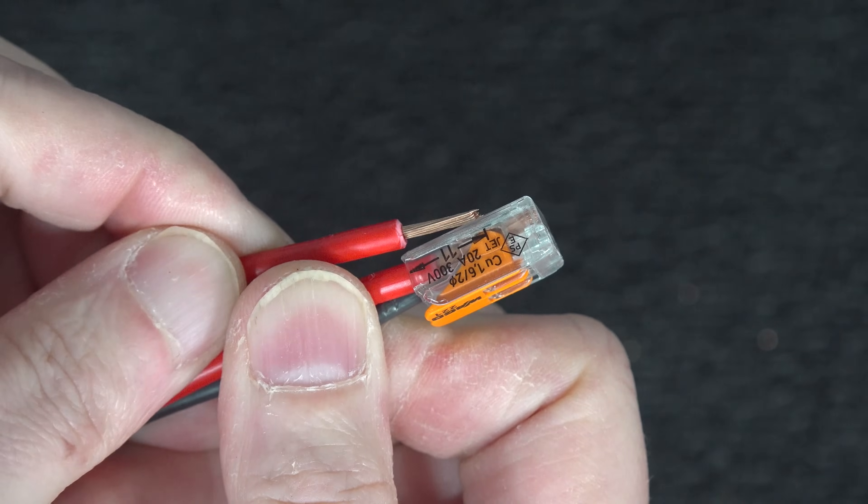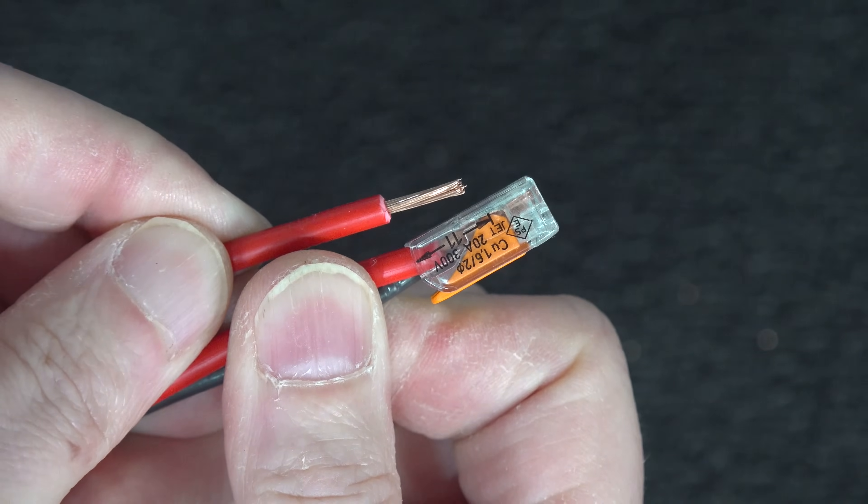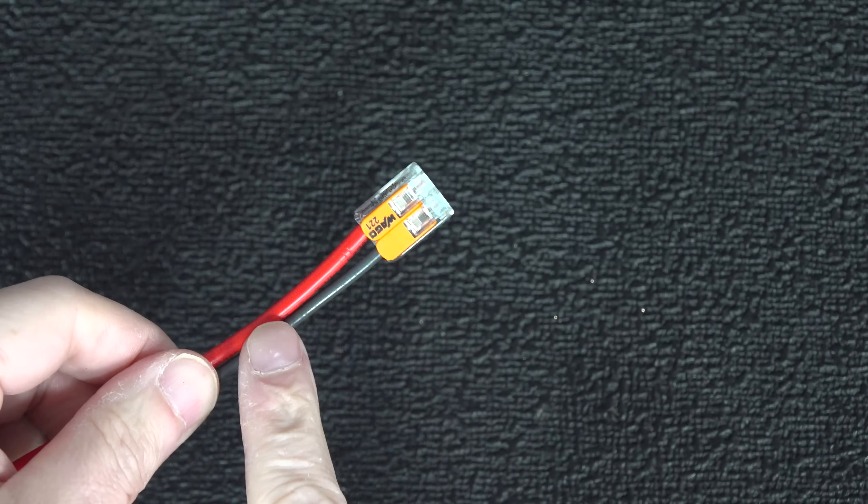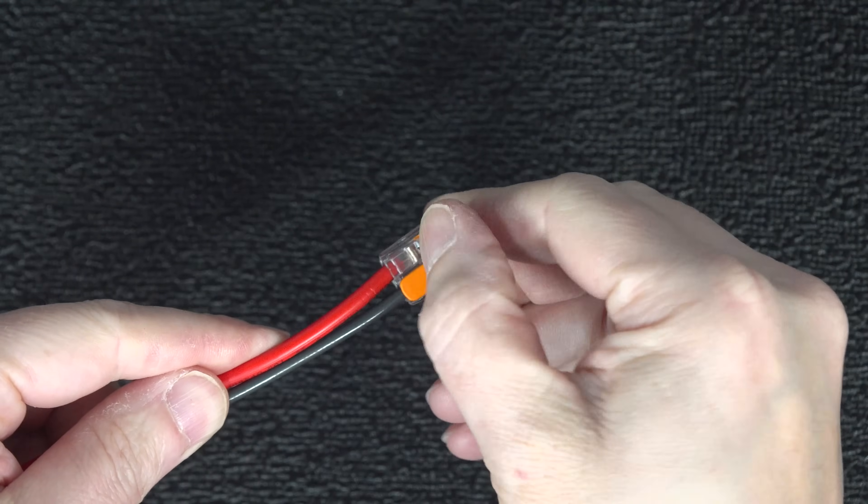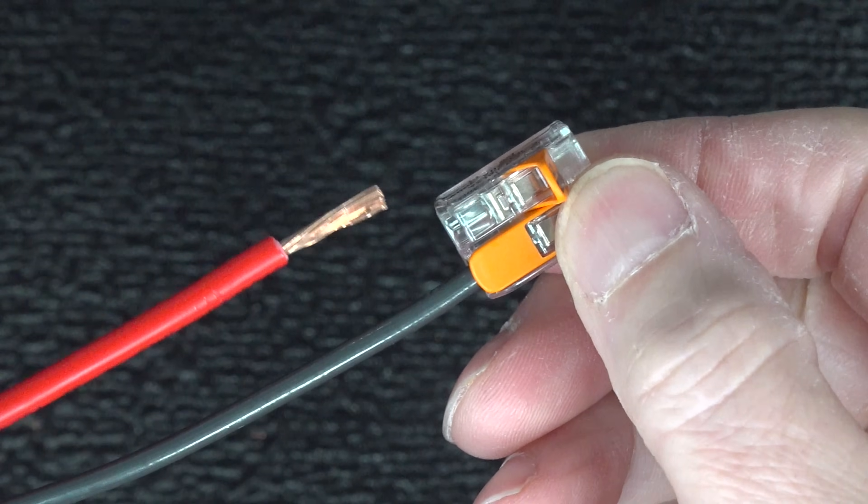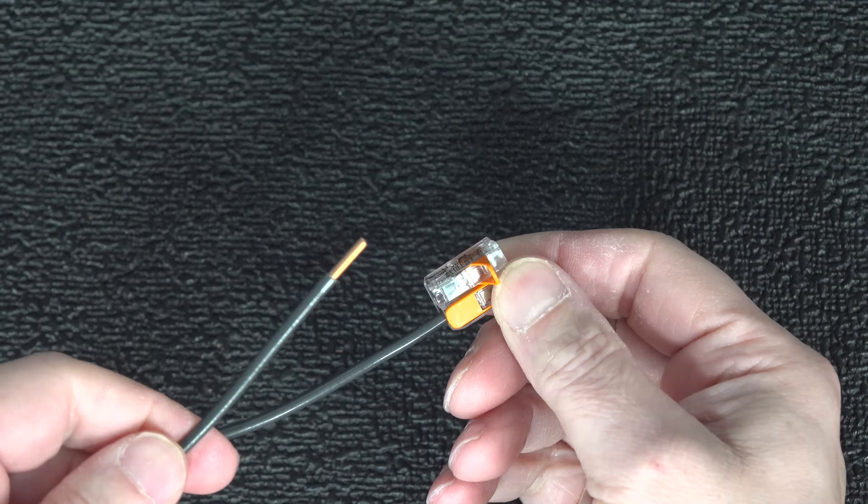But what if you make a mistake and you connect the wrong wire, or you want to make a change in the future? Well, with a wire nut, you've got to remove the electrical tape and redo the connection. With the Wego, it's easy. You just flip the lever up, and the wire can be easily pulled out.